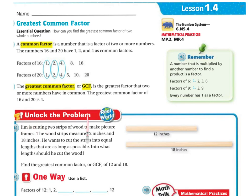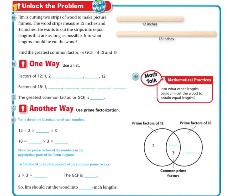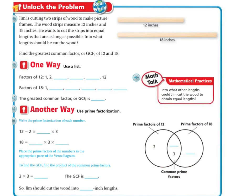All right, let's unlock the problem. Jim is cutting two strips of wood to make picture frames. The wood strips measure 12 inches and 18 inches. He wants to cut the strips into equal lengths that are as long as possible. Into what length should he cut the wood? So in order to do this, we need to find the greatest common factor, or GCF, of 12 and 18.